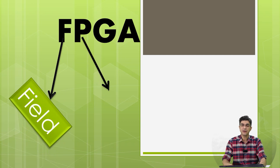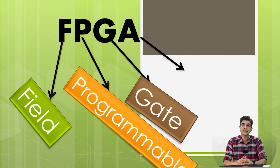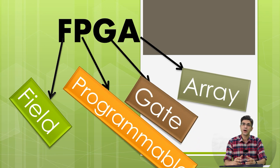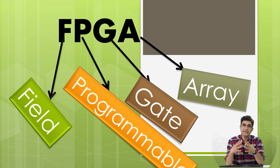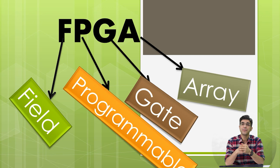For many years, engineers wanted to make a single IC for circuit design. If you want to make a digital circuit, you actually have two approaches. First, you can design it using TTL ICs — gate ICs like AND, OR, NOR, NOT, and so on. But if you use these kinds of ICs, the size is very large, power consumption is too high, and the design becomes more complex.